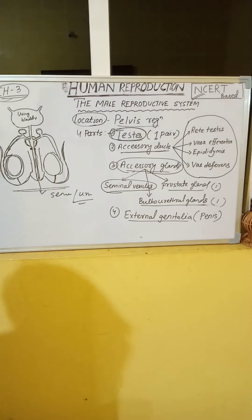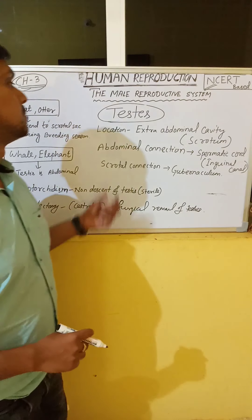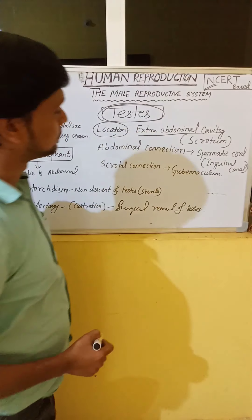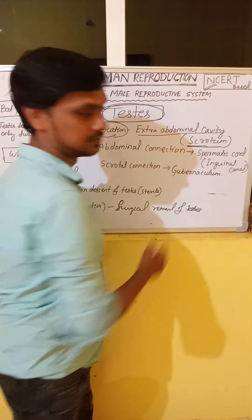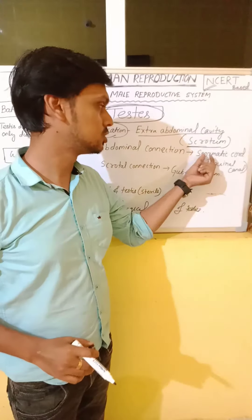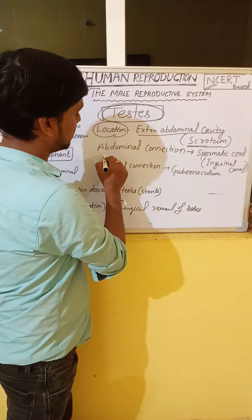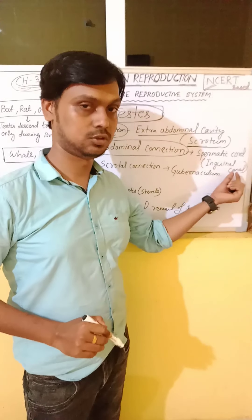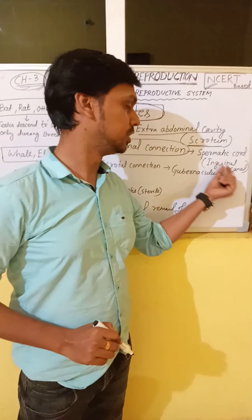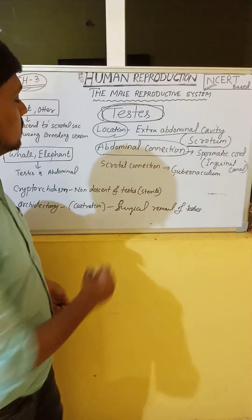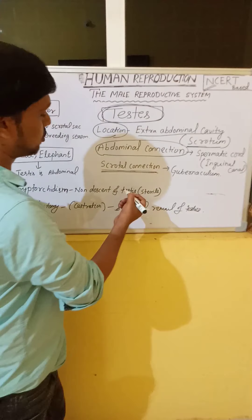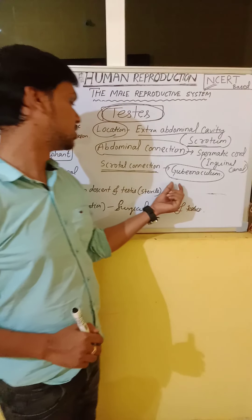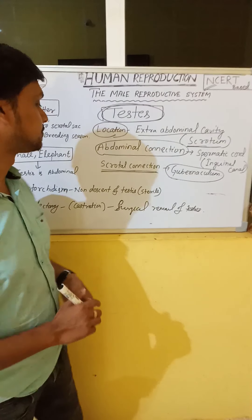Now discussing the detailed structure of testes. The testes are located in an extra-abdominal cavity called the scrotal sac or scrotum. The testes are connected with the abdomen through the inguinal canal by means of the spermatic cord. The testes are connected with the scrotal sac through an elastic ligament called the gubernaculum.